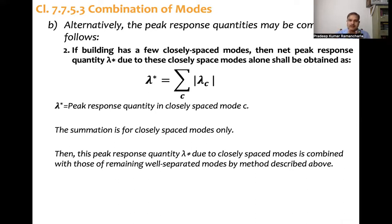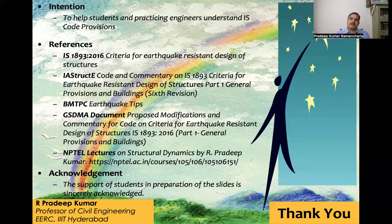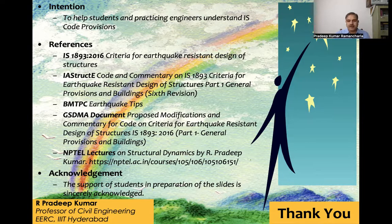In summary: if modes are occurring simultaneously - as in time history method - an entire time series can be added to get the final response. But in the response spectrum method, we need to use either the CQC method or the SRSS-based method. The intention of this short lecture is to help students and practicing engineers understand IS code provisions in a better manner. The following references were used in preparation of these slides, and I sincerely acknowledge the help of my research scholars in preparation of these slides. Thank you.